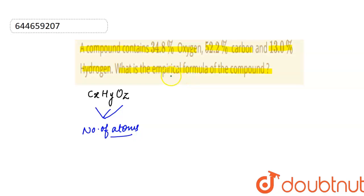So for calculating empirical formula, we need to calculate the value of X, Y, Z. That is the ratio of number of atoms of carbon, hydrogen and oxygen.